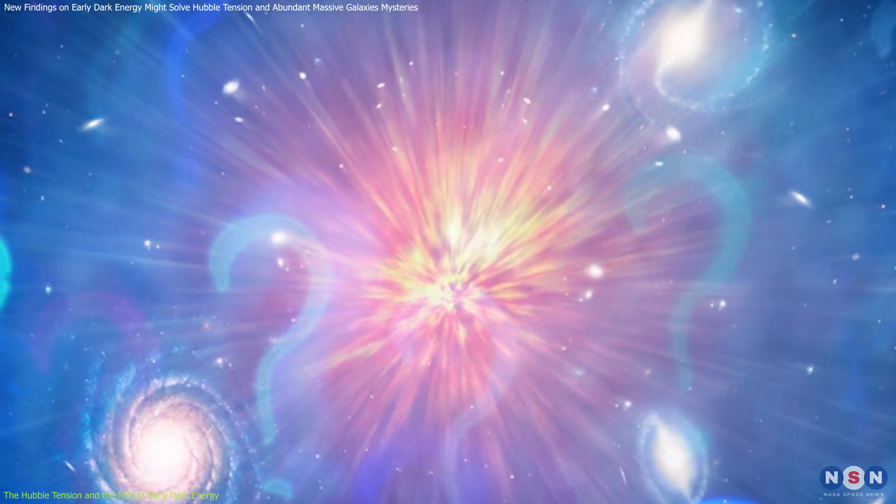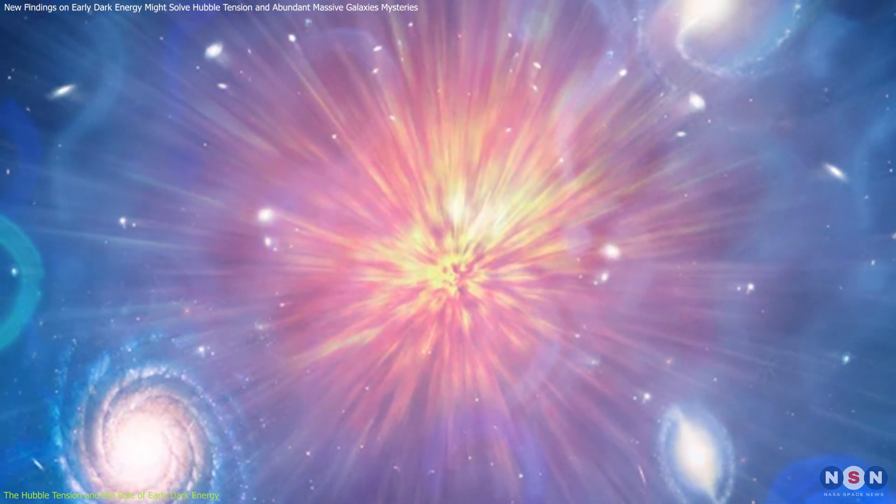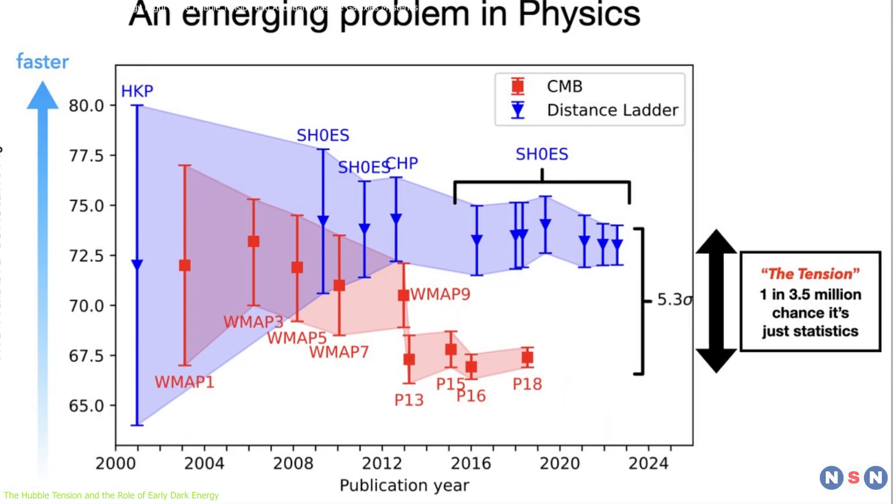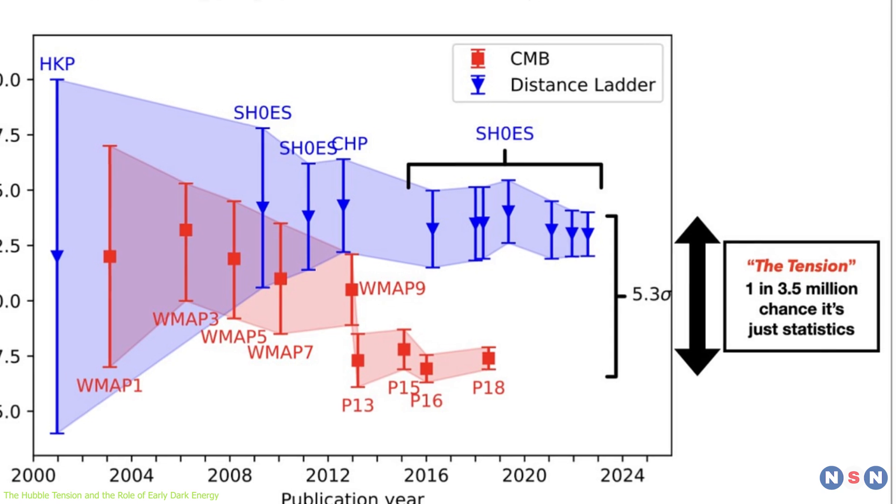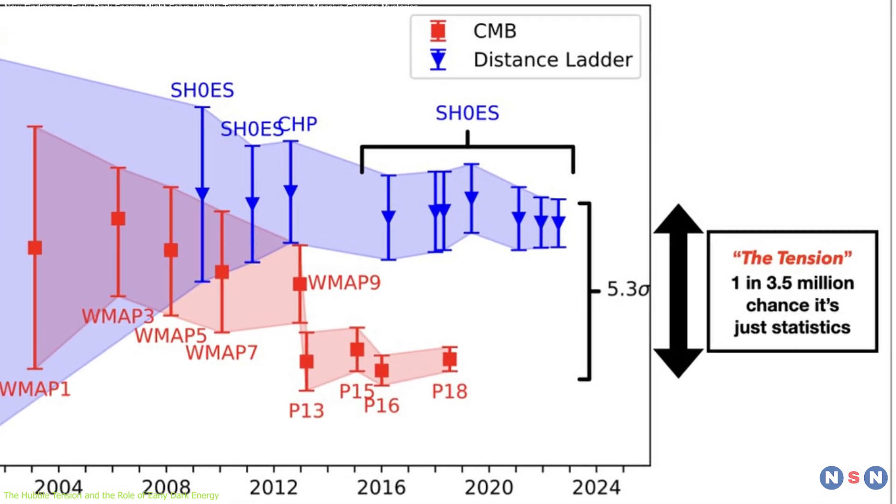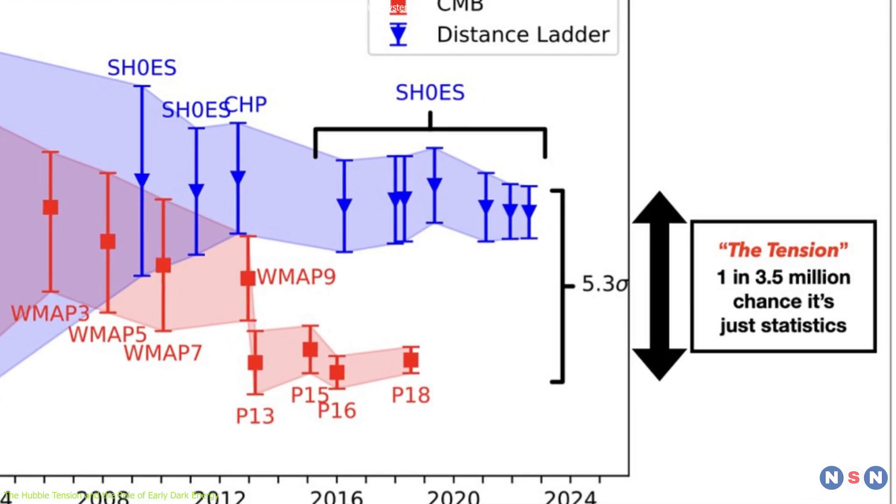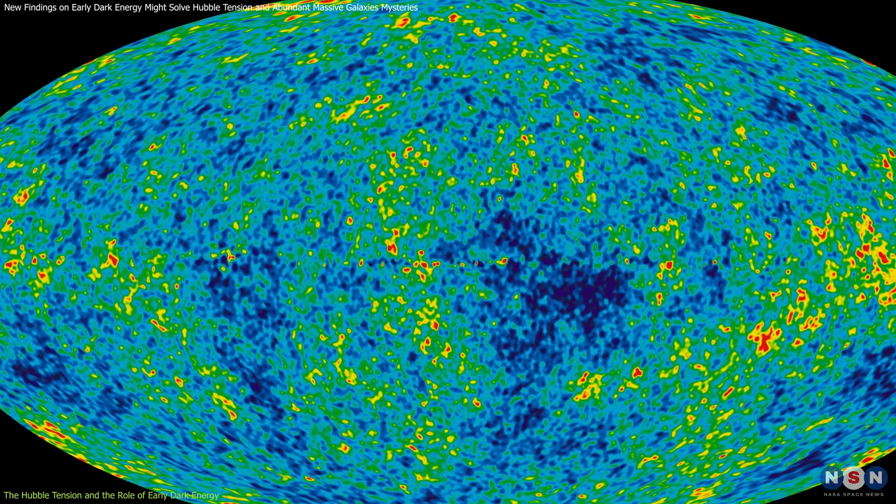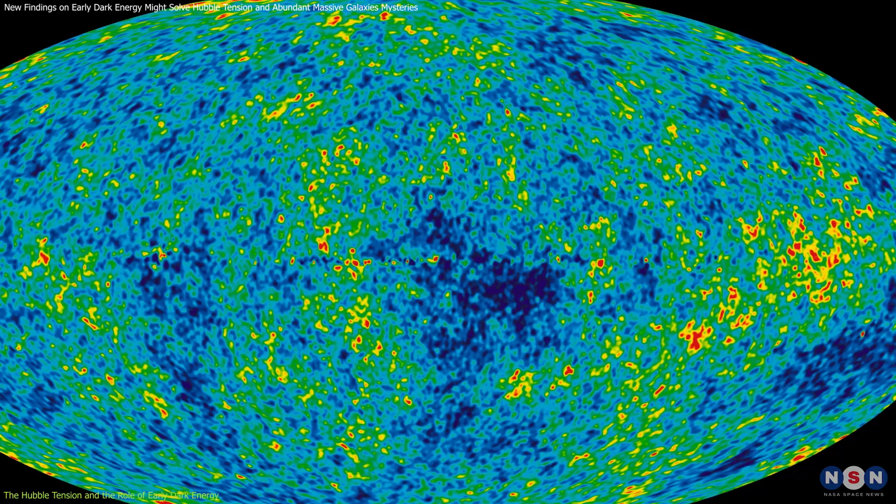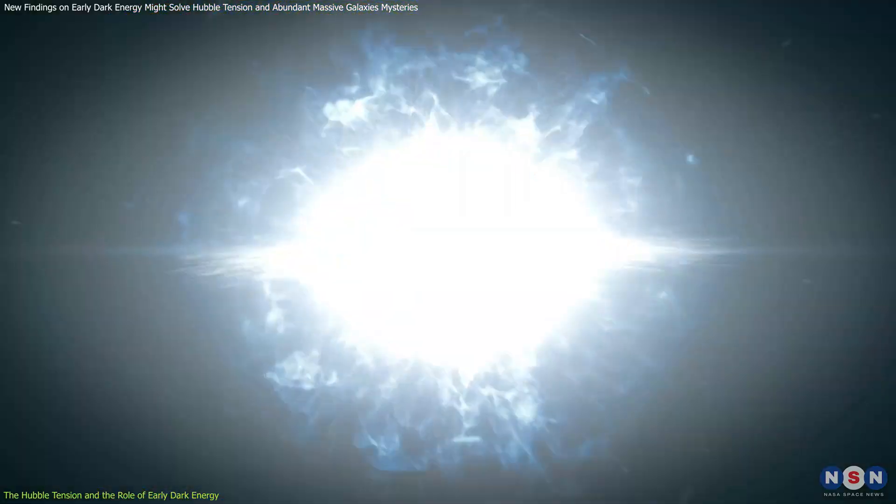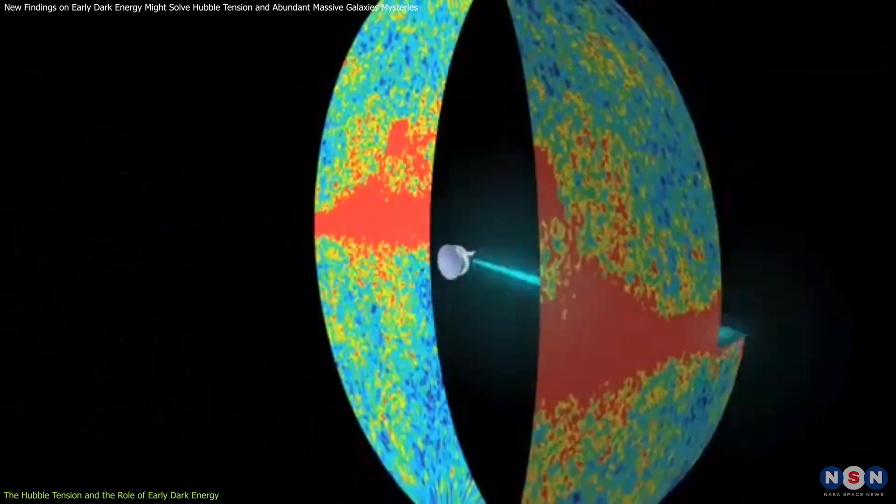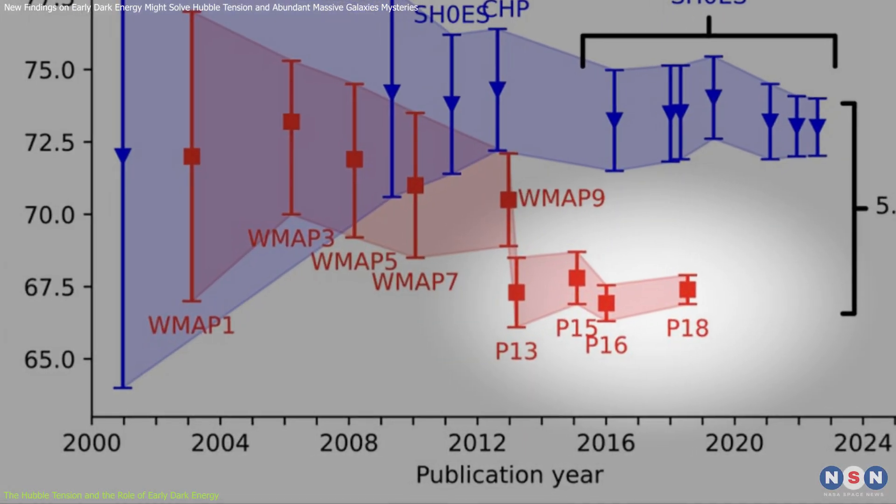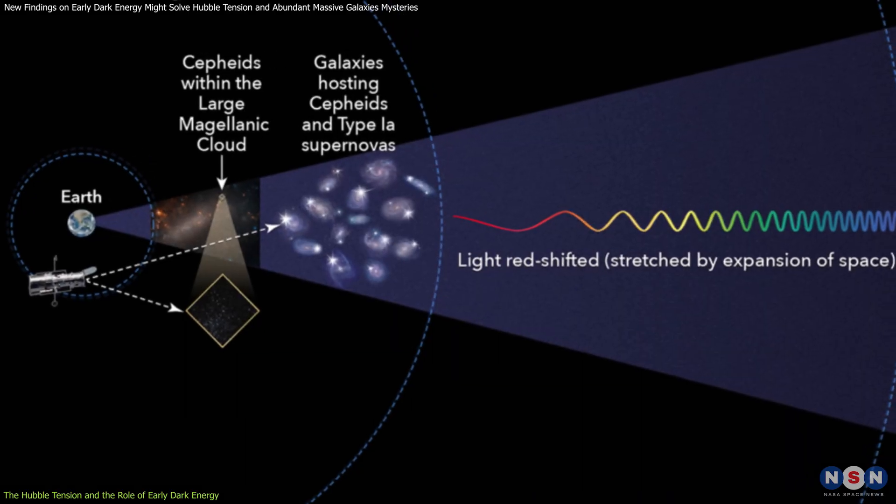Let's start with the Hubble tension, one of the biggest mysteries in modern cosmology. The Hubble tension refers to a significant discrepancy in measurements of the universe's expansion rate, known as the Hubble constant. On one hand, observations of the cosmic microwave background, CMB, the afterglow of the Big Bang, by experiments like the Planck satellite suggest one value for the Hubble constant.